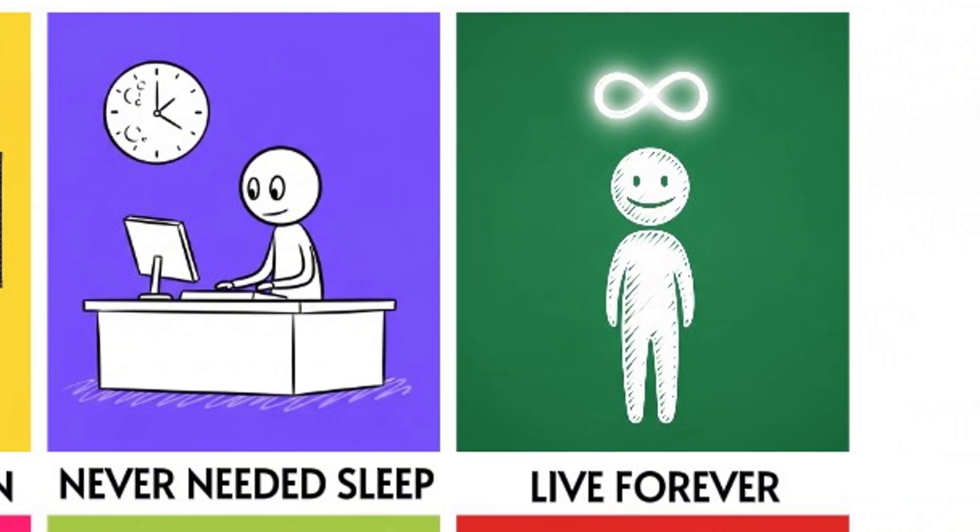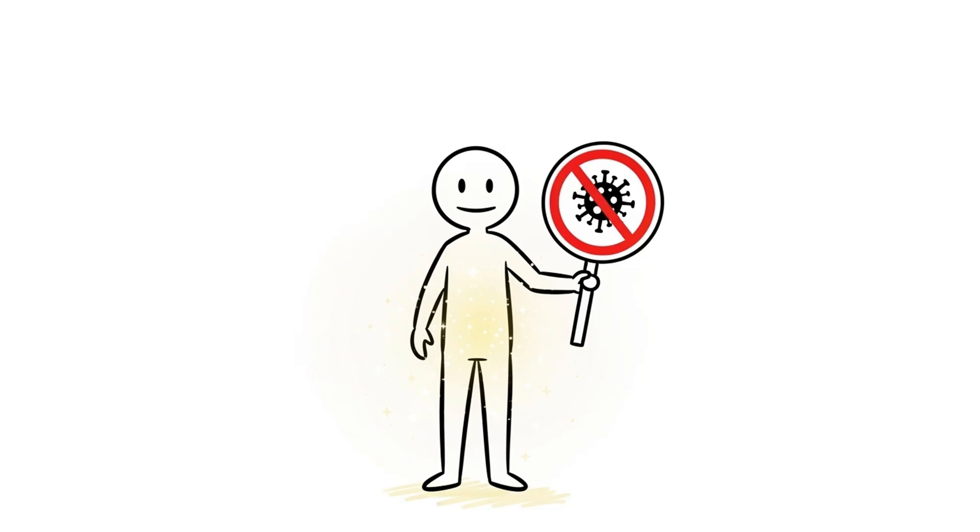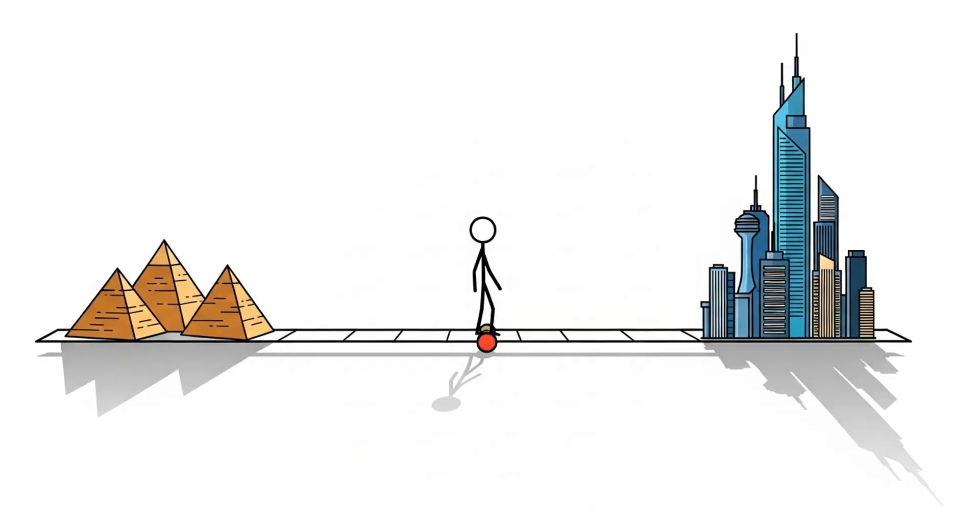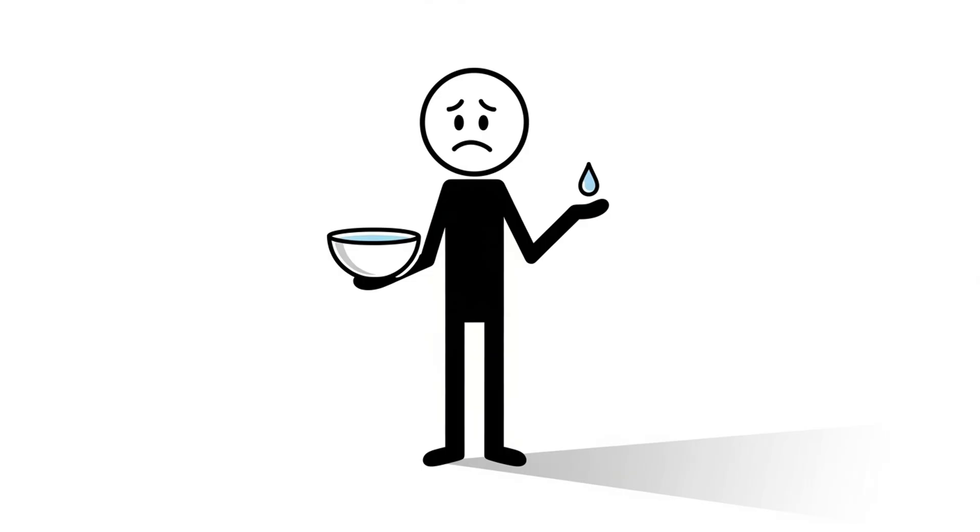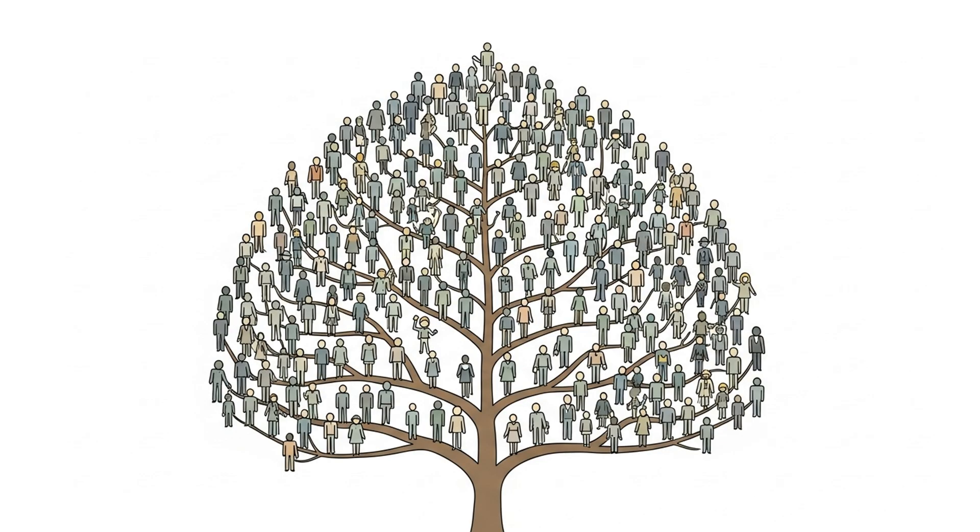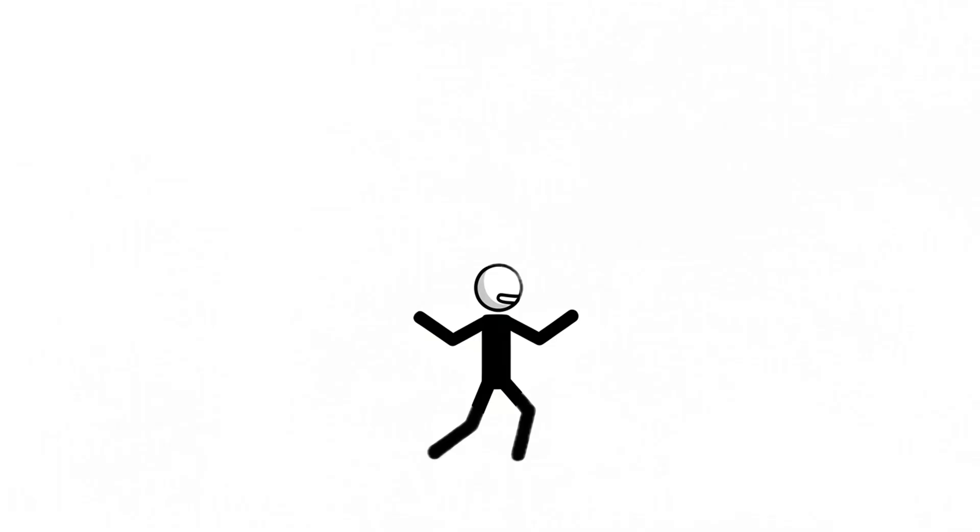What if humans could live forever? Imagine, you never age, never die. Your body would repair itself perfectly. No wrinkles, no sickness. You could see hundreds, even thousands of years of history unfold. But overpopulation could become a serious problem. Food, water, and resources might run out faster. Families would never lose loved ones, but they'd keep getting bigger. Jobs could be locked forever by the same people.